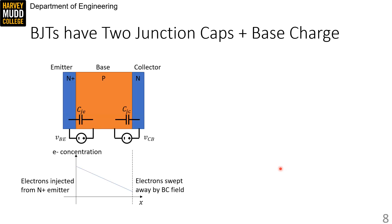I've pulled out our cross-section of the base of a BJT on the left of this slide and we can immediately identify two junction capacitors at the base-emitter junction and the base-collector junction. We'll call these CJE and CJC.